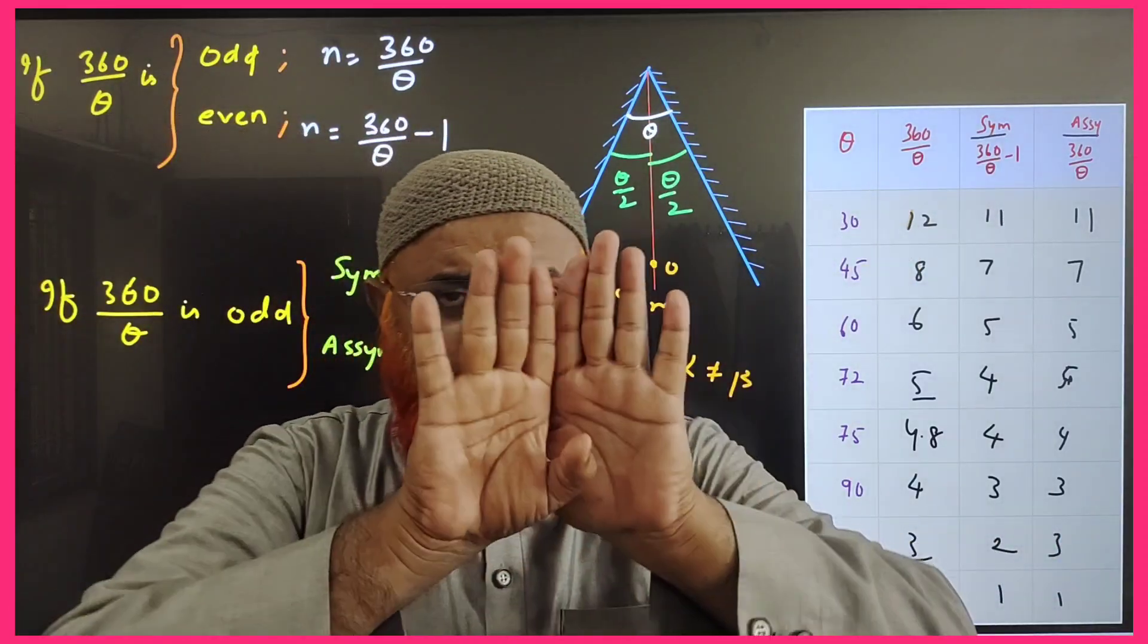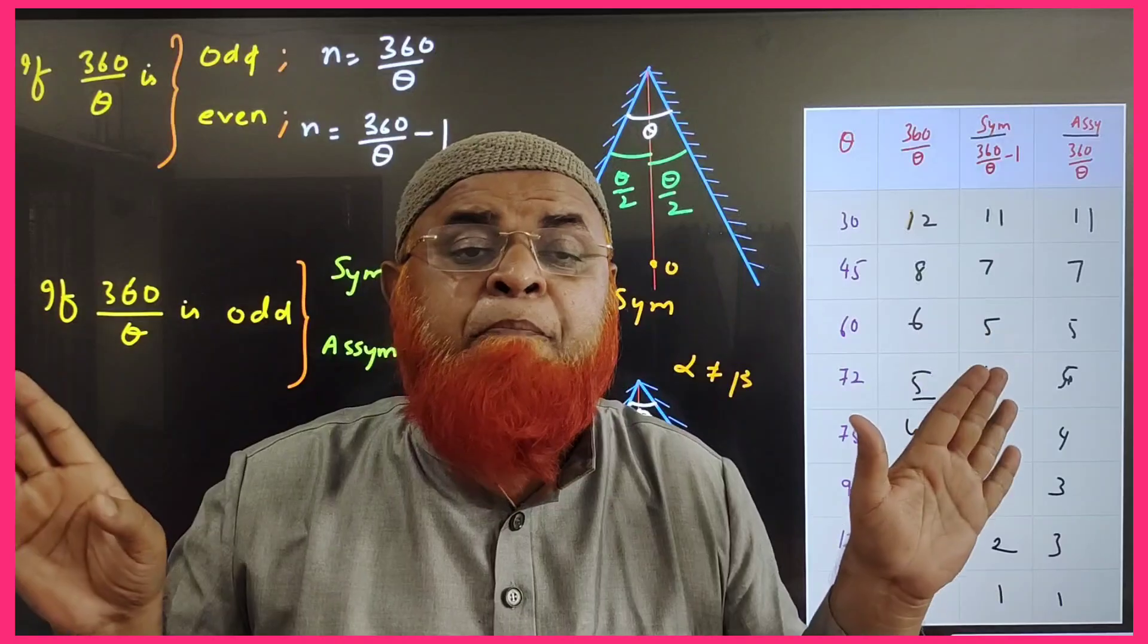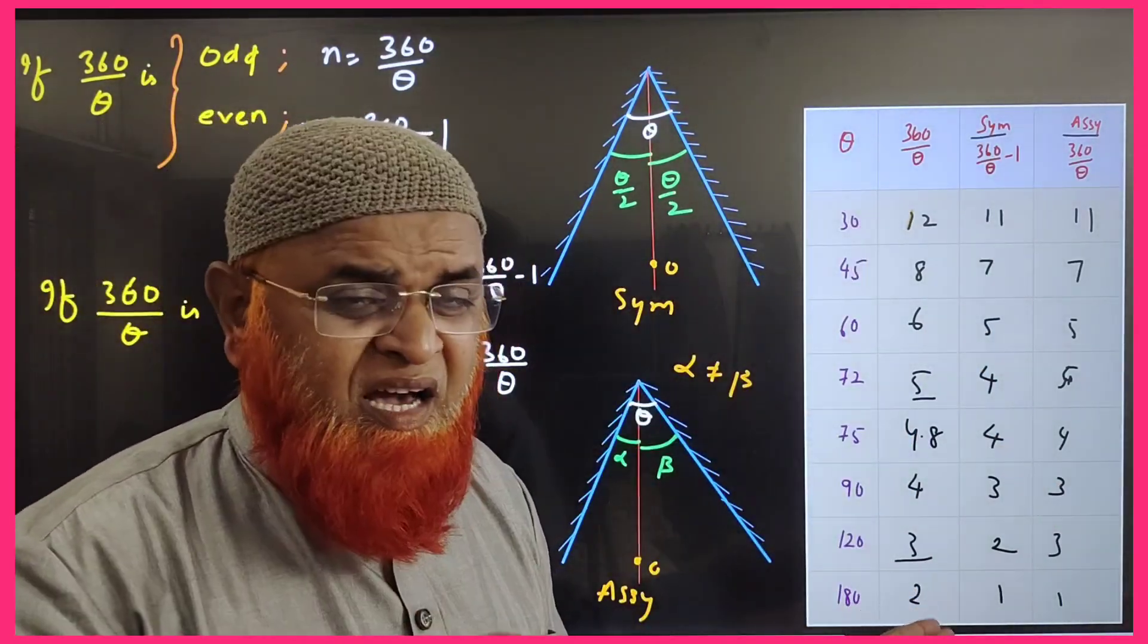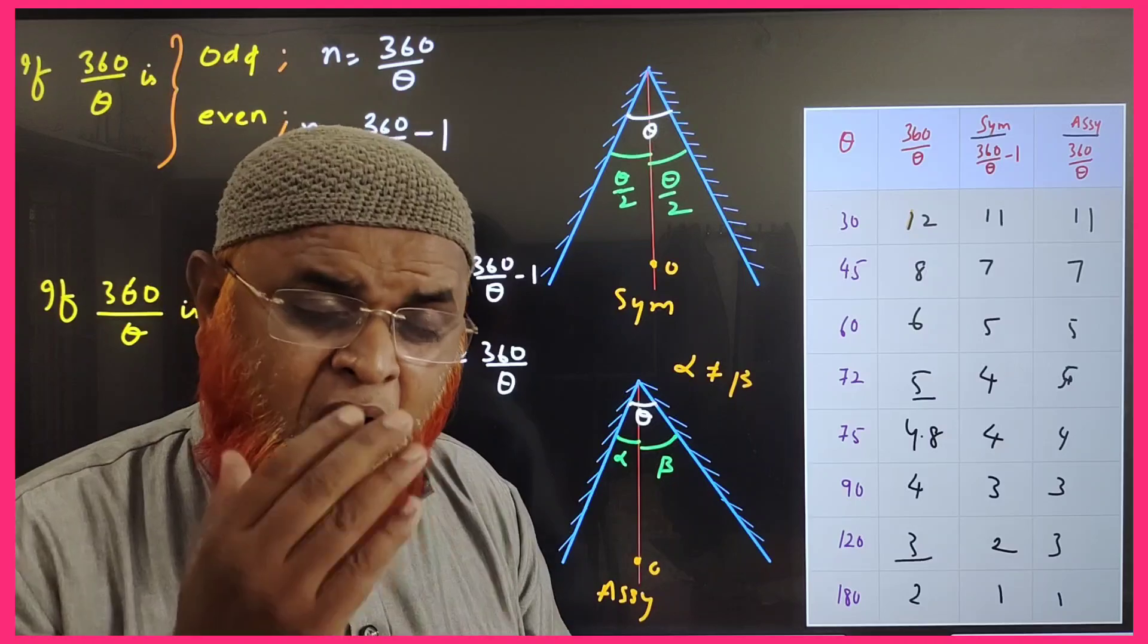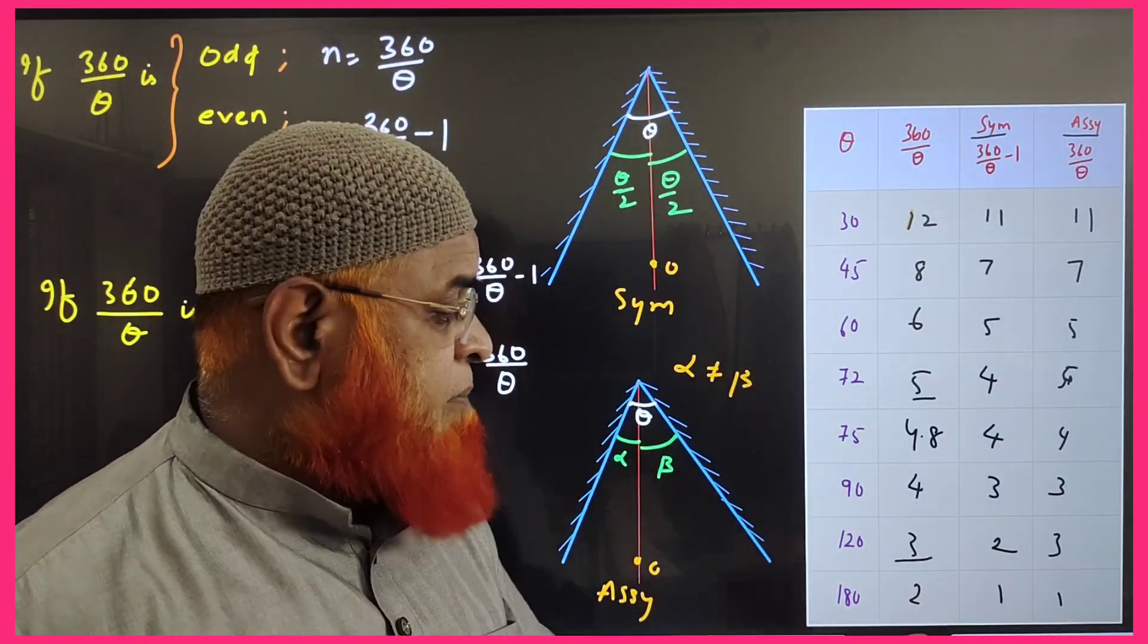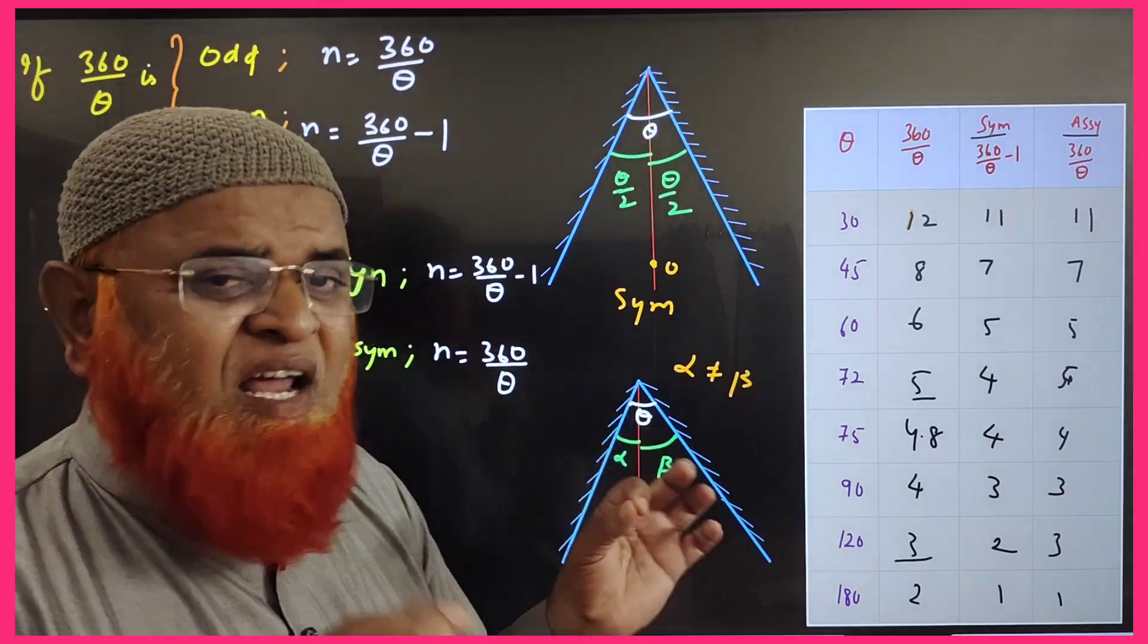And 180 degrees means you are opening the mirror in such a way that it is going to become a plane mirror. But as the value is getting as 2 here, 2 is an even number, you have to subtract with minus 1—that means 1 and 1 you write.